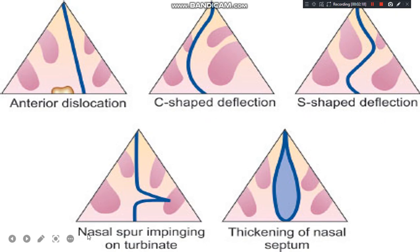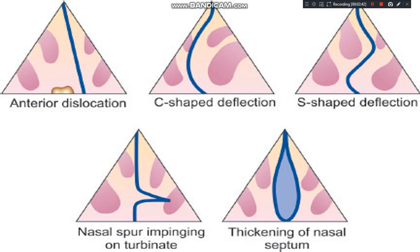The fourth type is nasal spur, which is a shelf-like projection. This projection can compress the lateral wall of the nose, resulting in pressure headache, and epistaxis is very common in this type. We also have thickening of the nasal septum, which can occur due to septal hematoma and other causes.